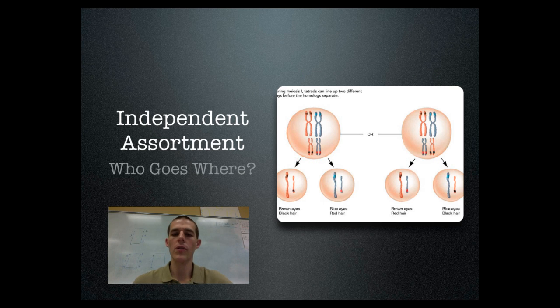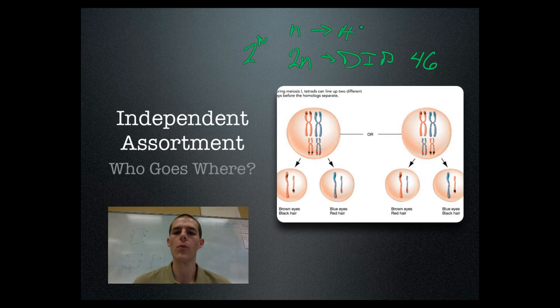Scientists mathematically represent this situation using the expression 2 to the n power. Now we've talked about previously that genetics are represented using n and 2n. If an organism is 2n, it is diploid. For humans, our diploid number is 46, so that means that each of the diploid cells in your body has 46 chromosomes in it.